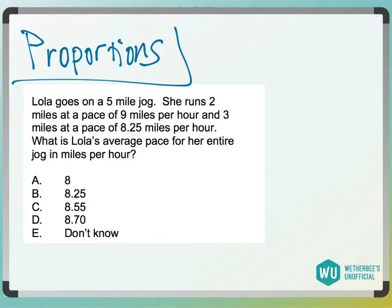Alright, so Lola goes on a 5 mile jog. She goes 2 miles at a pace of 9 miles per hour, and 3 miles at a pace of 8.25 miles per hour.